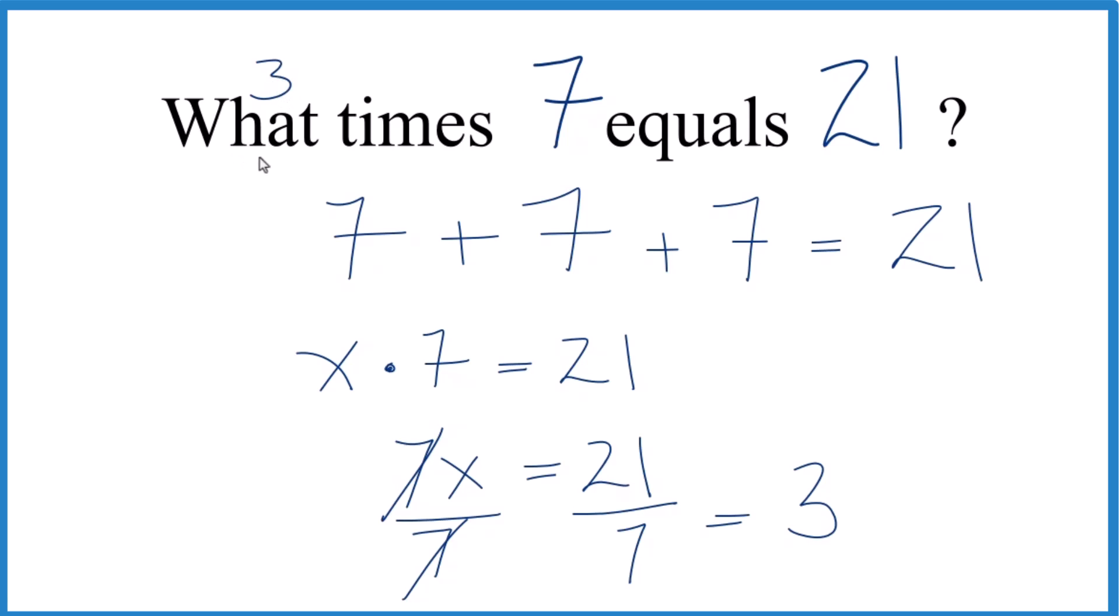So same thing again, when we ask the question, what number times 7 equals 21? The answer is 3. Note too, if you divide 21 by 3, you get 7.